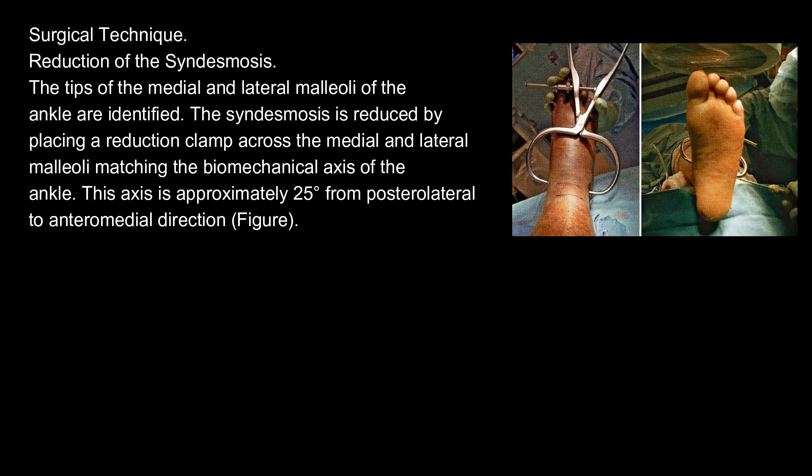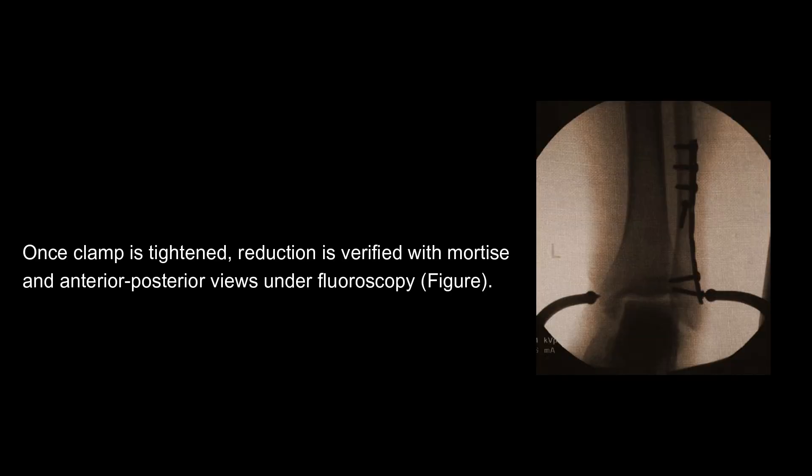Surgical technique - Reduction of the syndesmosis: The tips of the medial and lateral malleoli of the ankle are identified. The syndesmosis is reduced by placing a reduction clamp across the medial and lateral malleoli matching the biomechanical axis of the ankle. This axis is approximately 25 degrees from posterolateral to anteromedial direction. Once the clamp is tightened, reduction is verified with mortise and anterior-posterior views under fluoroscopy.